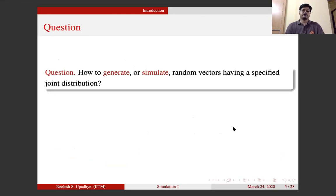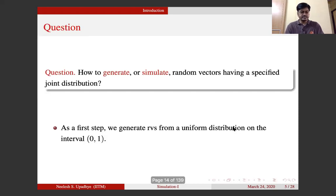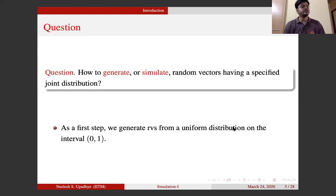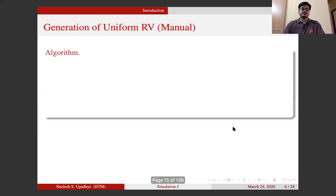The question is: how do we generate or simulate random vectors having a specified joint distribution? Having a specified joint distribution, it is difficult to answer this question in general. So as a first step, we will try to generate a uniform random variable — uniform on the interval (0, 1), a continuous uniform random variable. Assume that right now we don't have any computer and we want to simulate a uniform random variable. The next topic is the generation of a uniform random variable by a manual method.